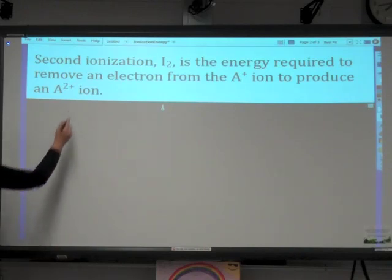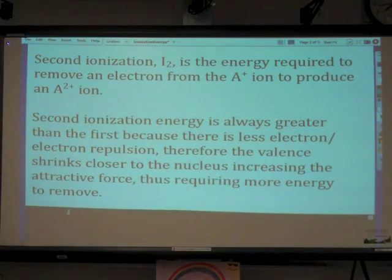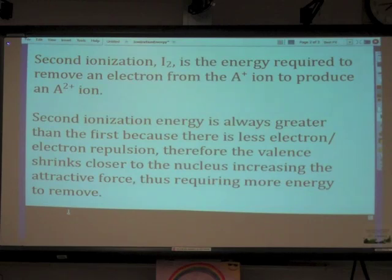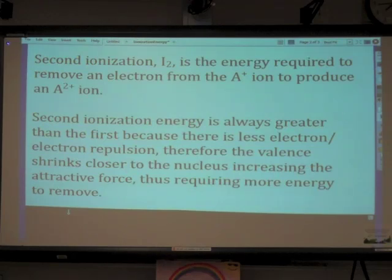It's always going to be greater. The second ionization is always greater than the first, because after the first ionization there's less electron-electron repulsion. We've lost electrons, therefore the valence shrinks closer to the nucleus, and that increases the attractive force between the nucleus and the valence electrons. So it's going to require more energy to remove an electron, because everything has shrunk closer to the nucleus.